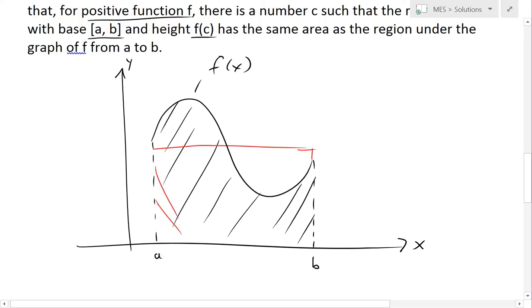So I'll draw it in red and highlight this area underneath this rectangle. So then basically this height right here is going to be our height f(c), where this value right here is c.